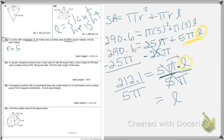212.1 divided by (5 times 3.14), rounded to the nearest hundredth, gives us 13.51. If you have any other questions, feel free to post them in the private comments or instruction comments, and I'll be glad to go over any of these problems. Hopefully this helps.